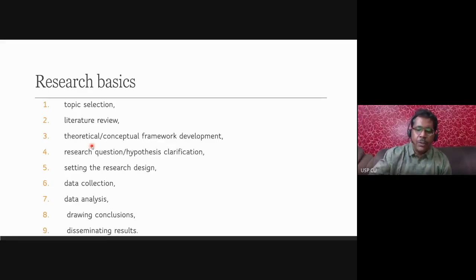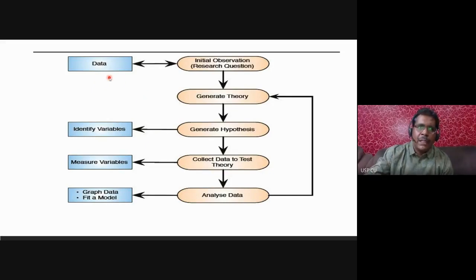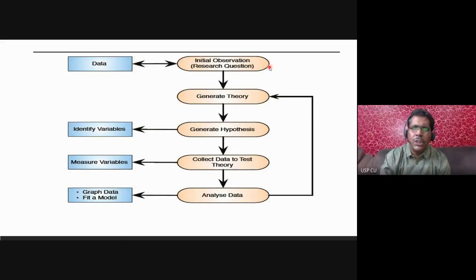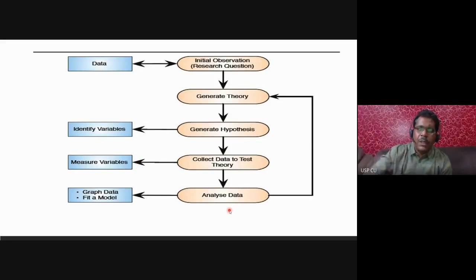Before we start with hypothesis, let me talk about normal curves. This is from the book by Andy Field. Initially, say you have a research question — just an observation that people who watch reality TV have their IQ go down. You have some data based on initial observation, you qualify it, think of a theory to justify observations, generate a hypothesis, identify variables, test against theory, measure, and finally the analysis happens.